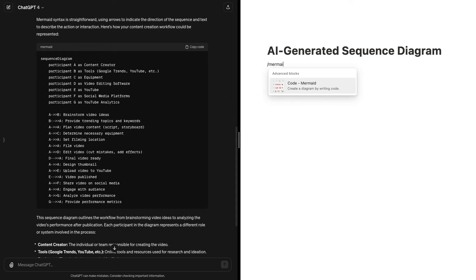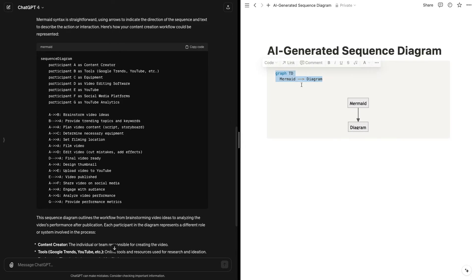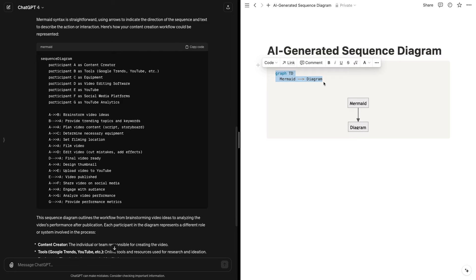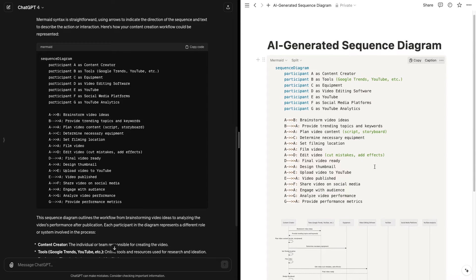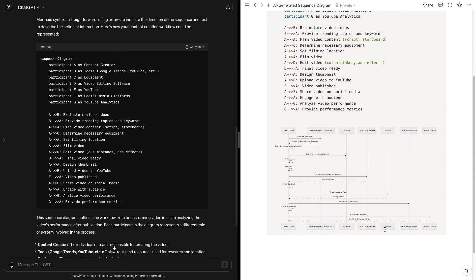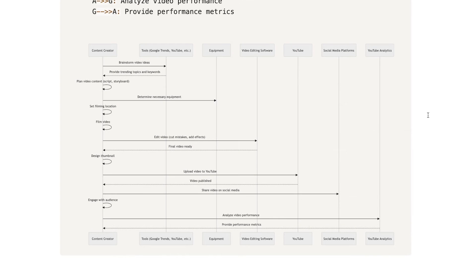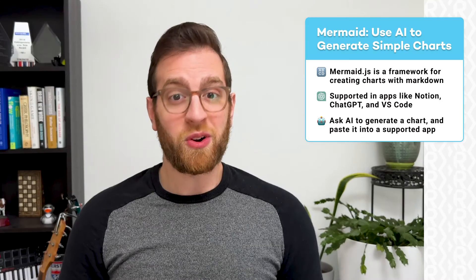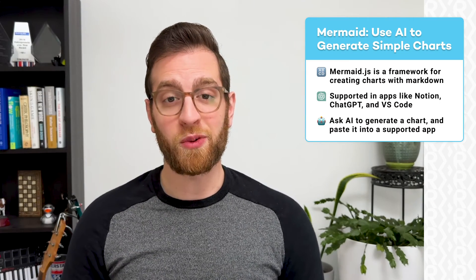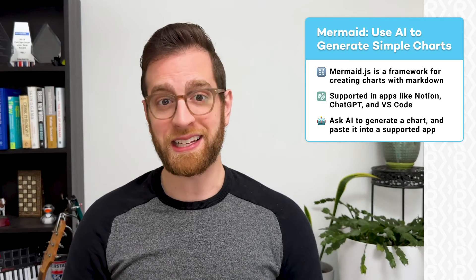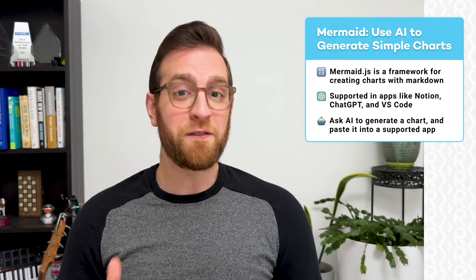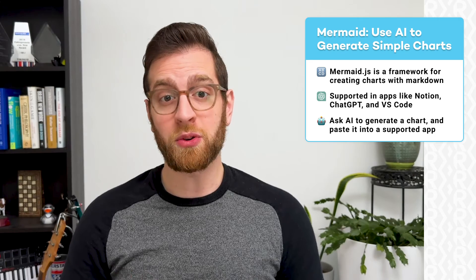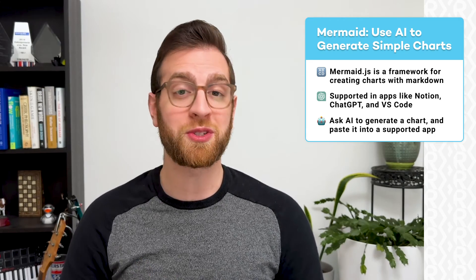If you're comfortable with Mermaid syntax, you can write out each step manually to create a chart. But if you'd rather skip that, you can just ask Notion AI or ChatGPT to write out the markdown for you, then accept Notion AI's output or paste ChatGPT's answer into Notion to instantly get a diagram. It might not be a perfect representation of your request, but it's usually an excellent starting point you can edit as needed. To get started, try out the custom GPT linked in the resources board — it's designed to help you break down processes and visualize them with a Mermaid diagram you can paste into Notion or tools like Visual Studio Code.